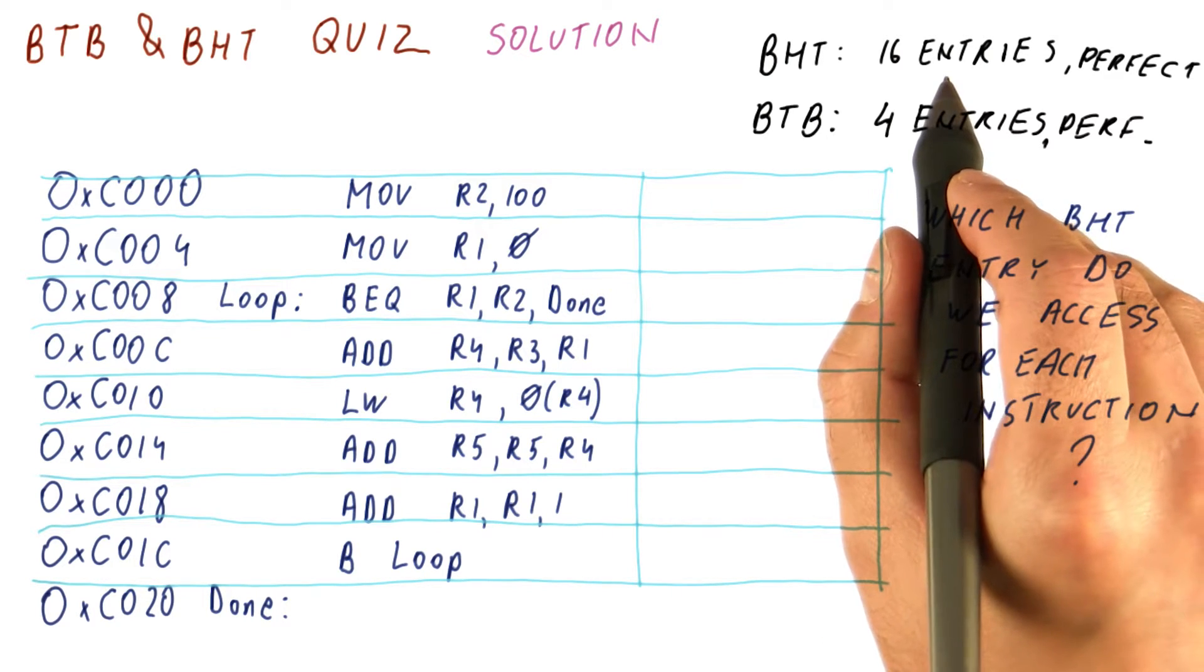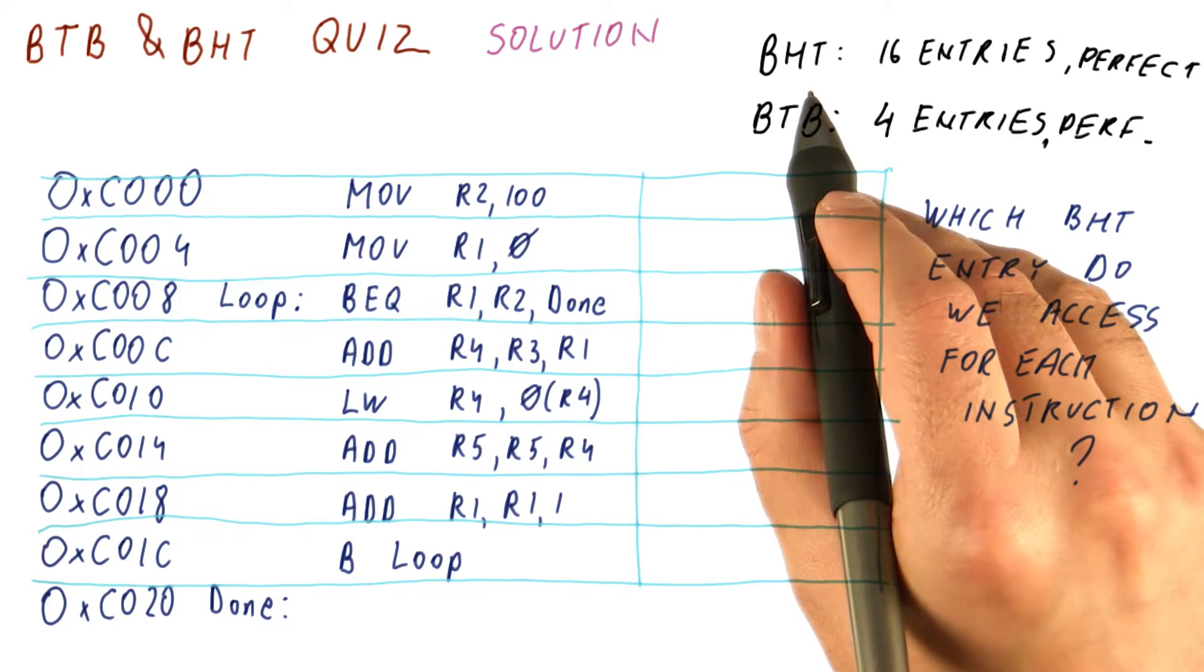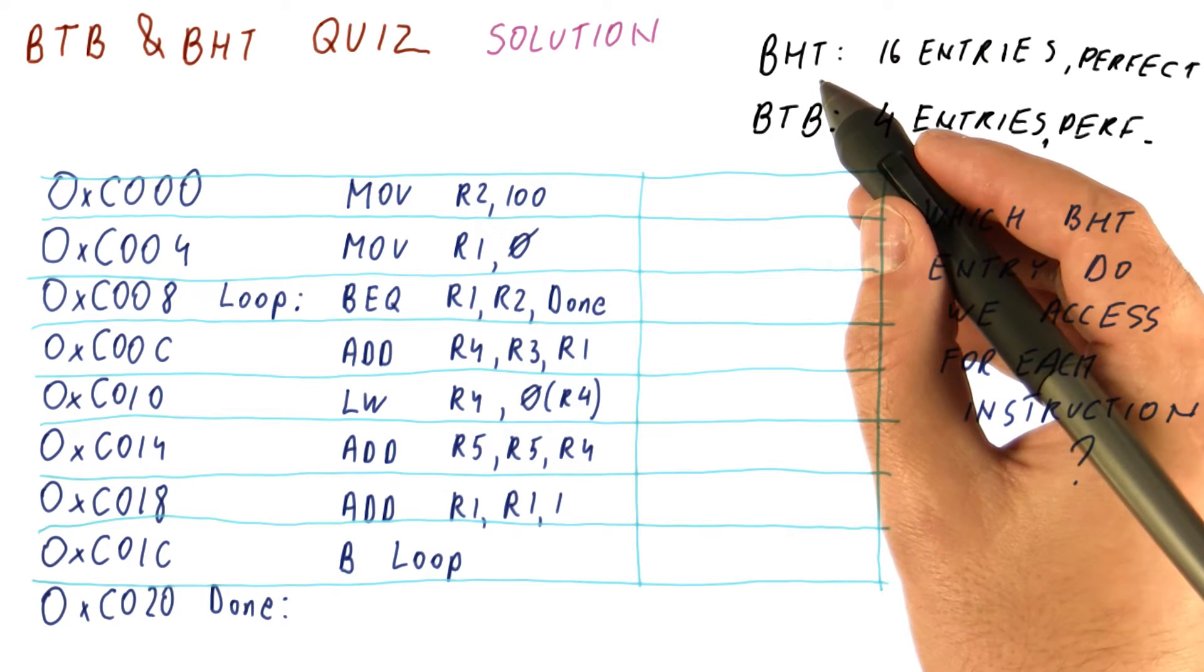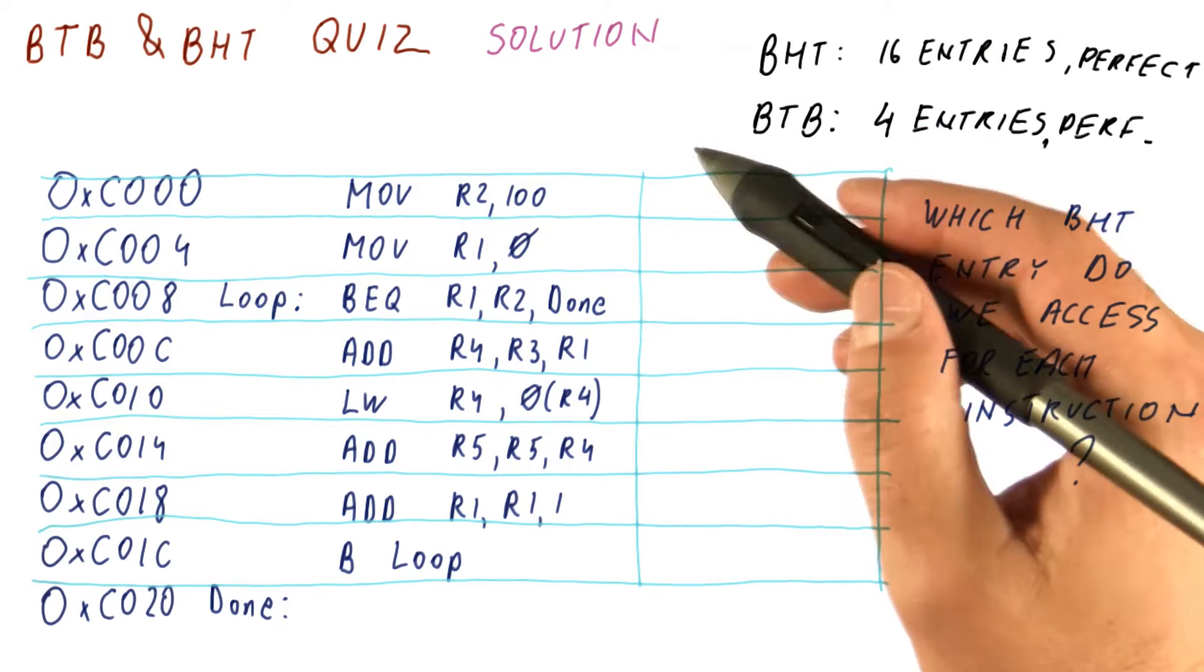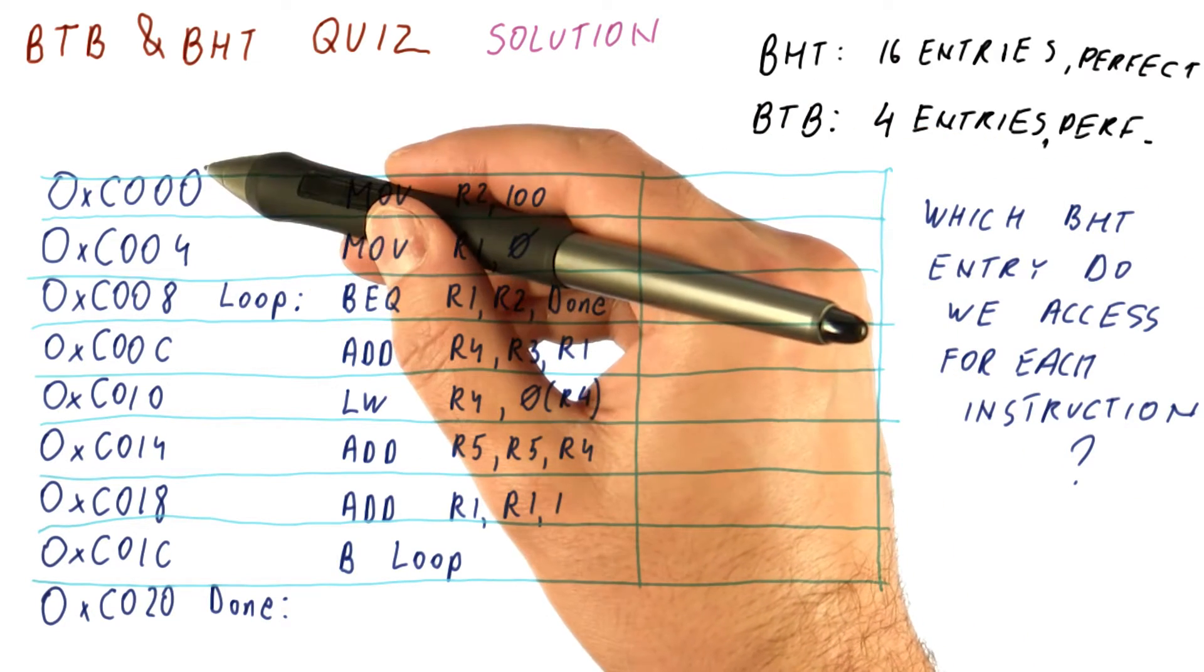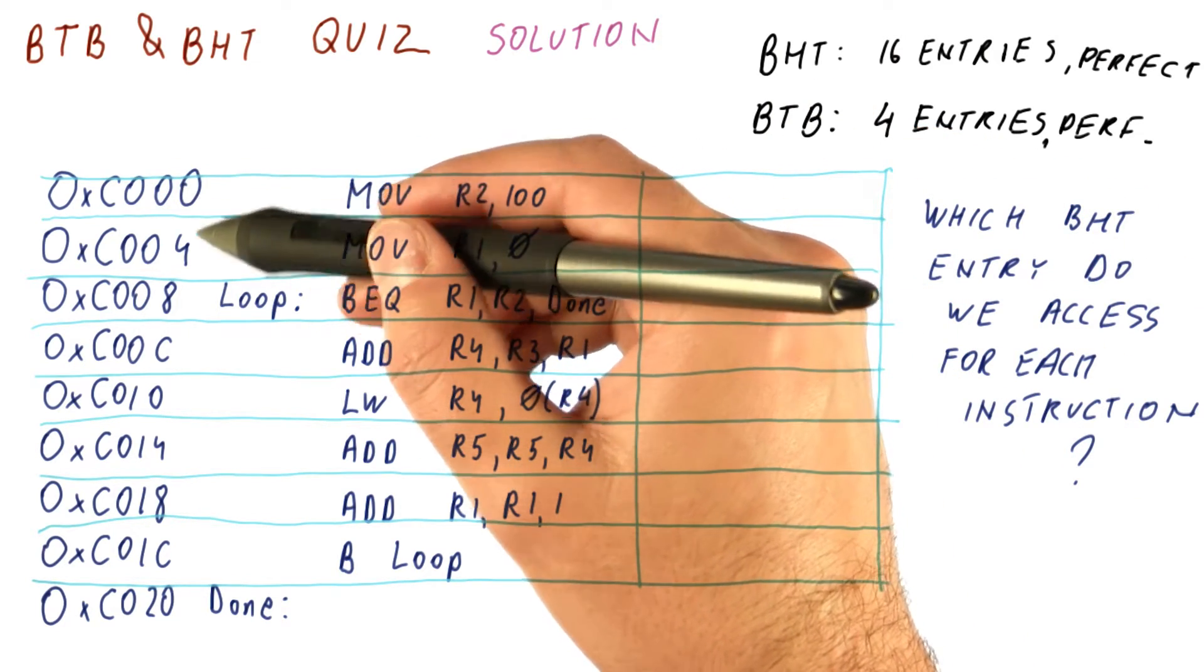There are 16 entries in the BHT and we said that we access the BHT using the lowermost bits of the instruction address that are not the same for all instructions.